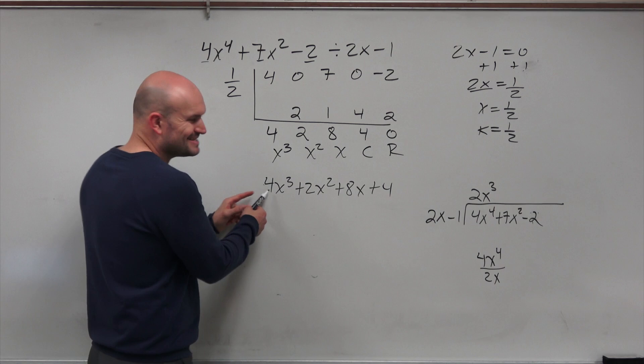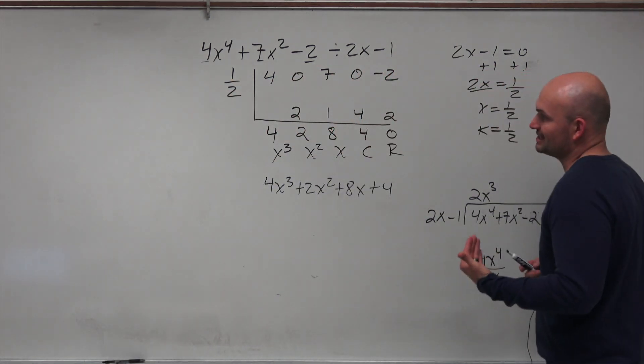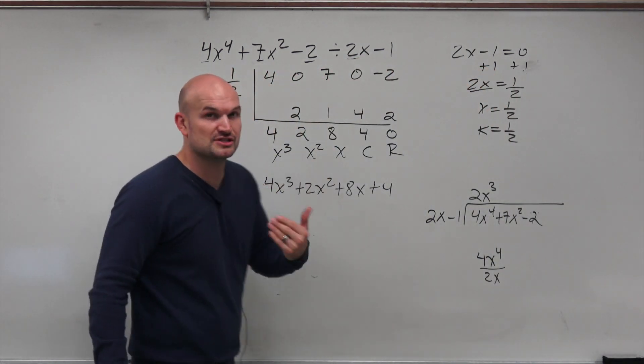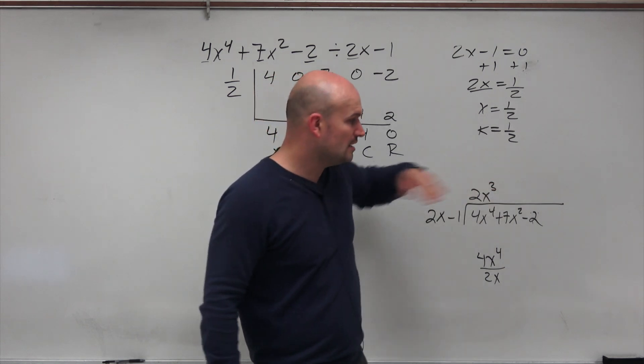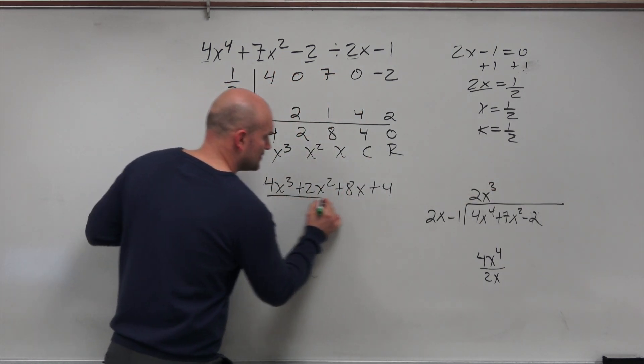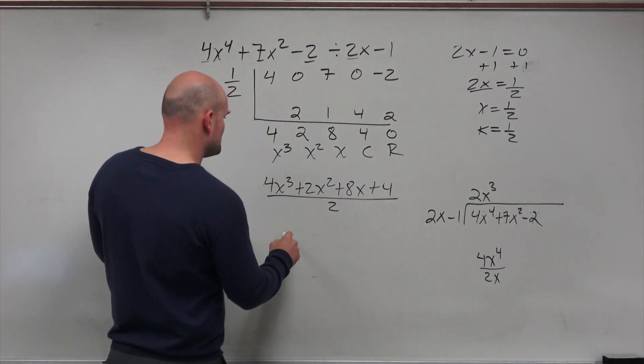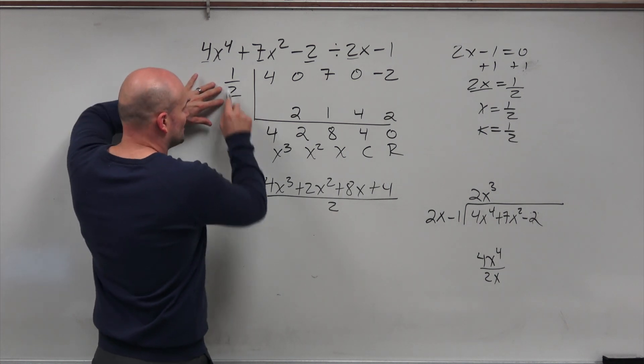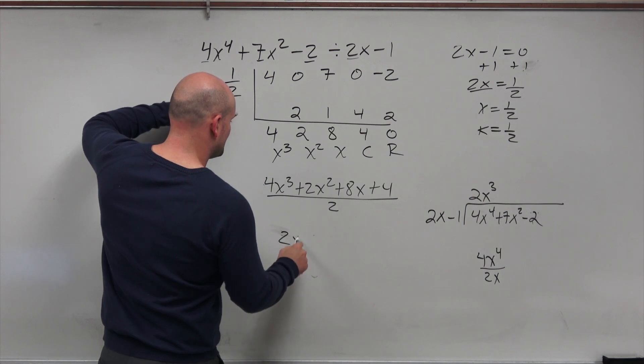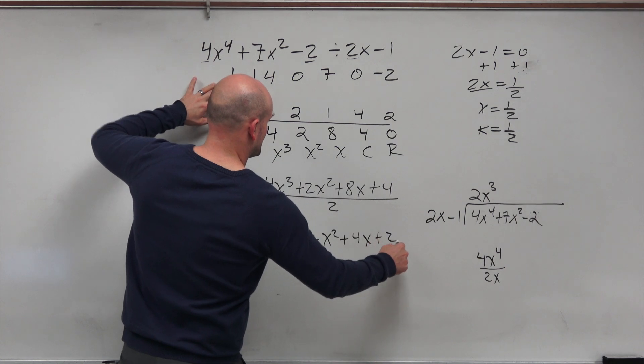So what happens when you're doing synthetic division, when you have a coefficient, and this works when we have this coefficient of our variable x or a fraction for our k, what we're going to need to do is divide back out that 2. You're going to need to divide each and every one of these terms by 2 to take into consideration that fraction. So therefore, that will finally give me a quotient of 2x cubed plus x squared plus 4x plus 2.